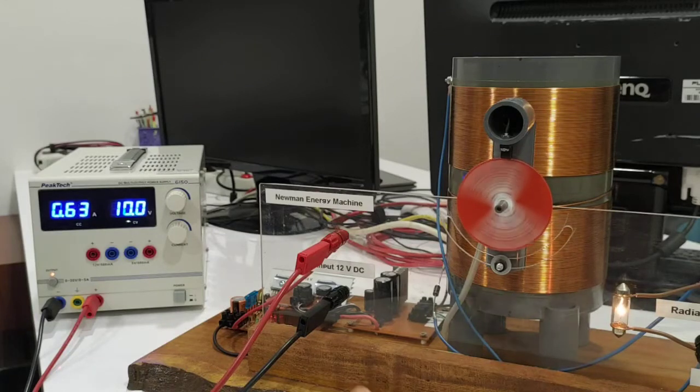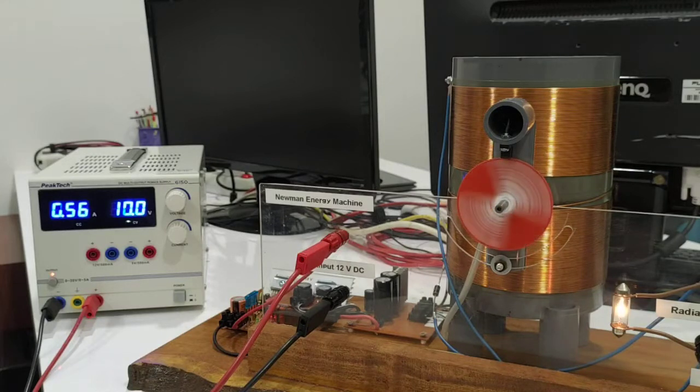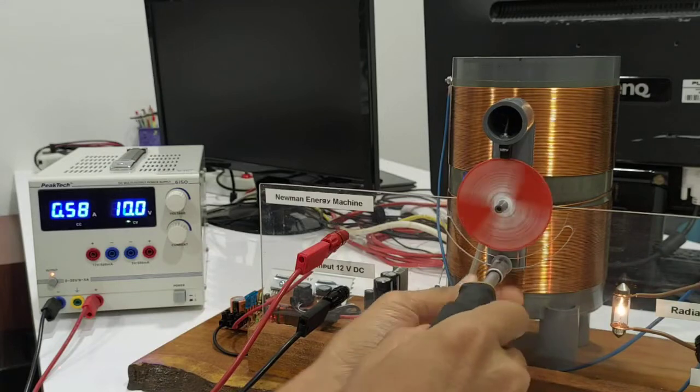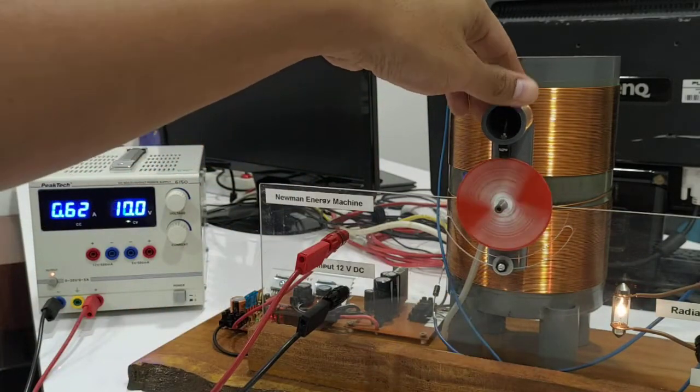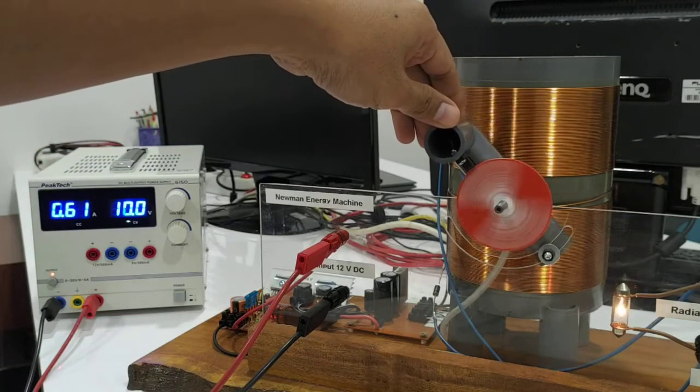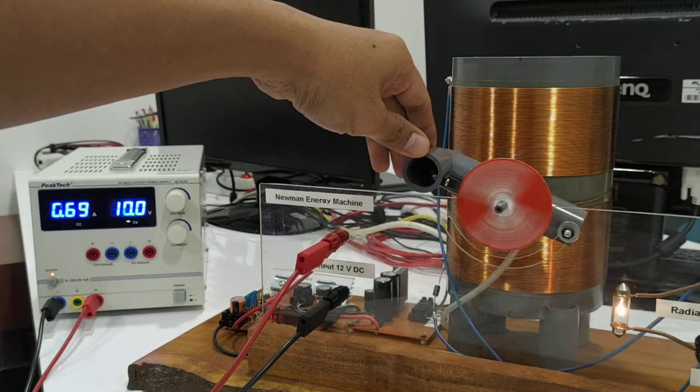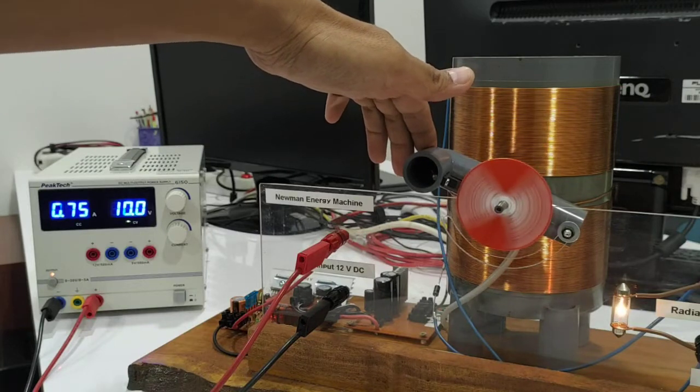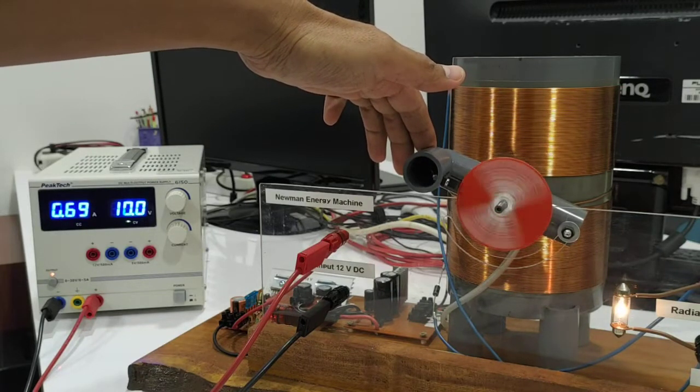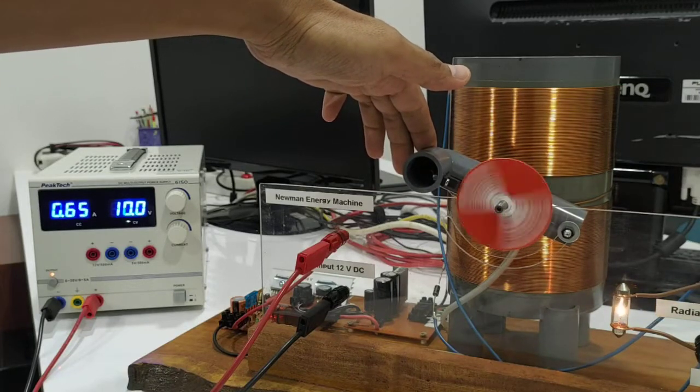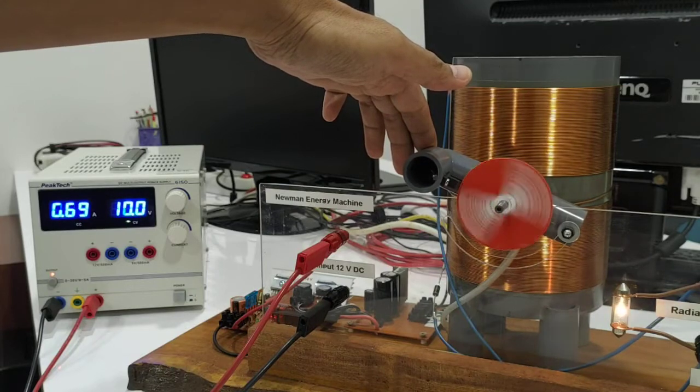Now I'm going to show you the effect of the different timing position. I will move the sensor to the left. The RPM goes down, the input power increases.